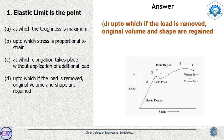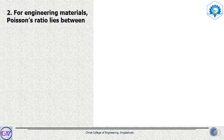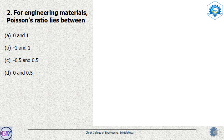Let's move on to the second question: For engineering materials, the Poisson's ratio lies between — with options 0 and 1, minus 1 and 1, minus 0.5 and 0.5, or option D: 0 and 0.5. We know from the theory of elastic materials that the range of values Poisson's ratio can take is 0 and 0.5, so the answer is option D.